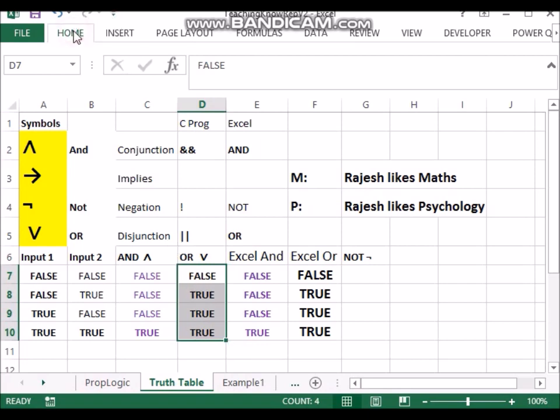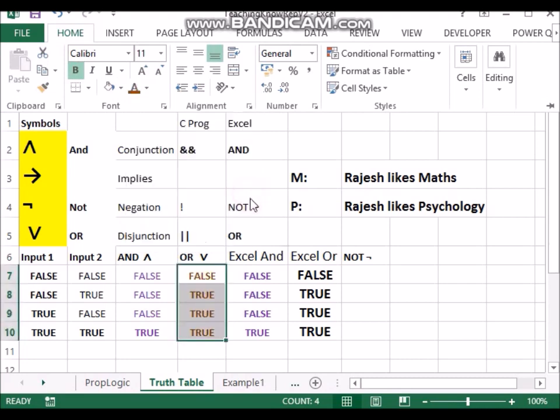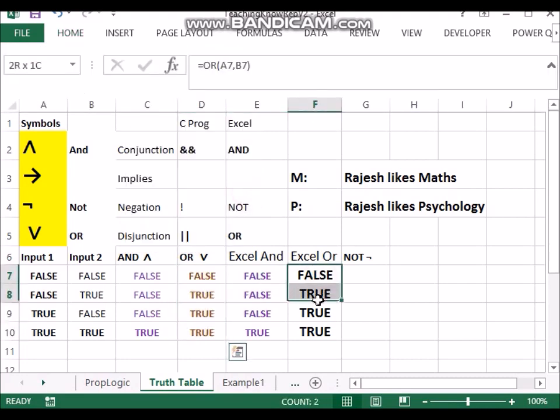So you will notice this one is very similar to this one. So we can straight away see these two have come out same and the other two have come out same. So that's the meaning of and and this is the meaning of or.